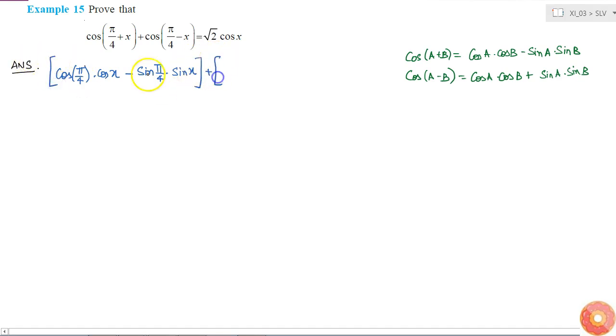What is cos pi by 4 minus x? This is cos pi by 4 into cos x plus sin pi by 4 into sin x. This is our left hand side.